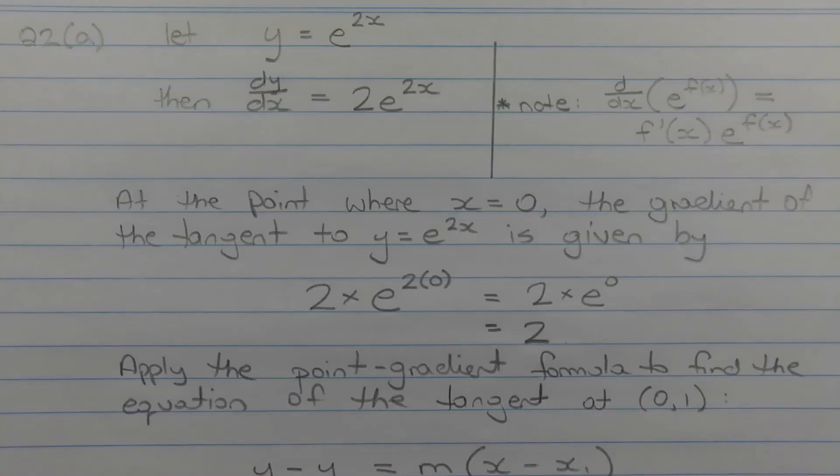The first thing we need to consider is the gradient of the tangent. To get the gradient, we differentiate the original function with respect to x and then substitute the particular value of x that corresponds to the point where the tangent meets the curve.